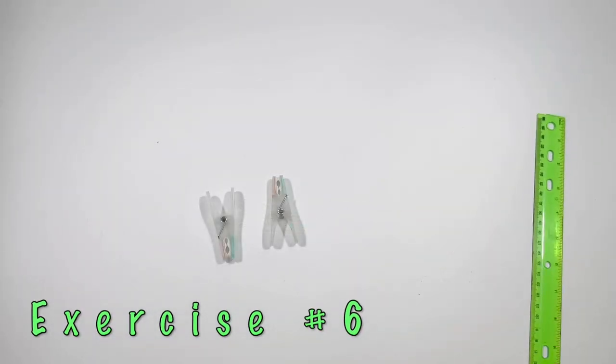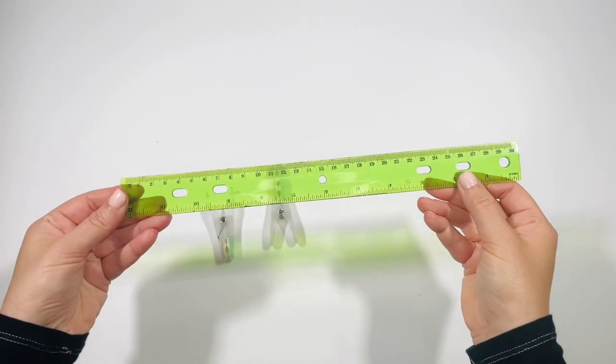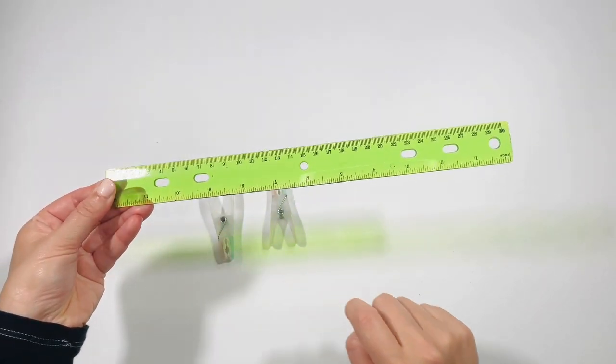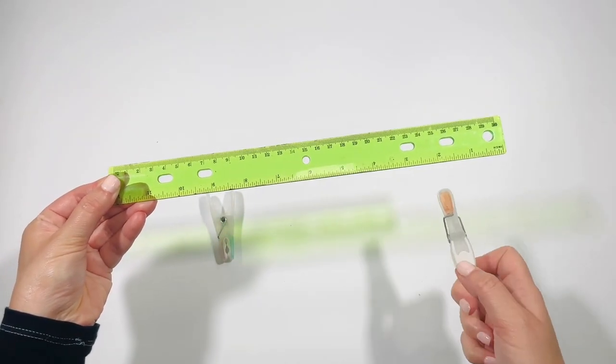Exercise number six. Use the cloth pins to count the numbers on the ruler from one to two. Go one way and then back.